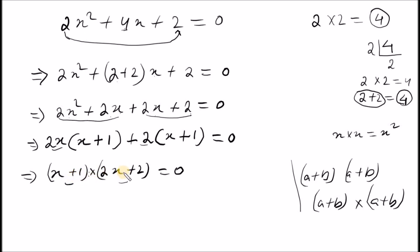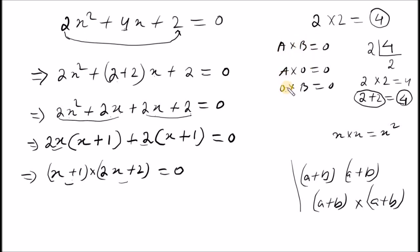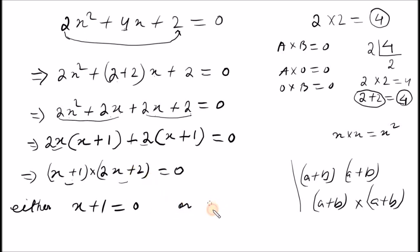So x plus 1 into x plus 2 equals 0. If a into b equals to zero, then either a equals zero or b equals zero. So x plus 1 equals to zero or 2x plus 2 equals to zero.